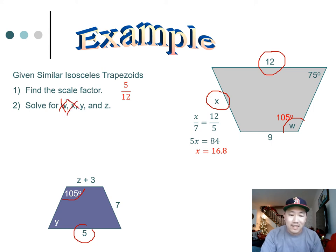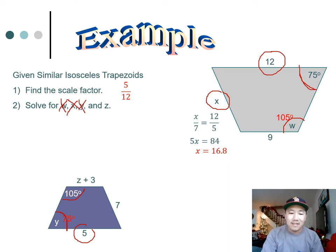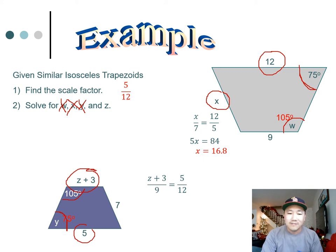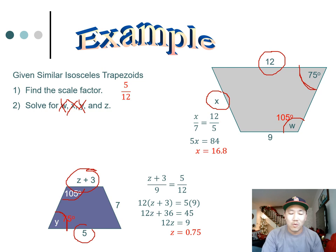Y is an angle, so match it up — Y equals 75. For Z, a side: Z plus 3 matches up with 9, using the scale factor 5 to 12. Cross multiply, do the math, and solve for Z — Z equals 0.75. Solving one at a time makes it manageable.